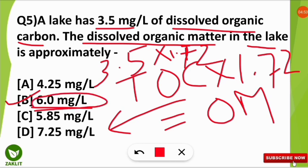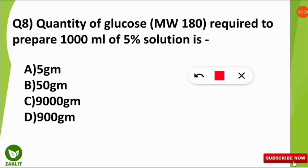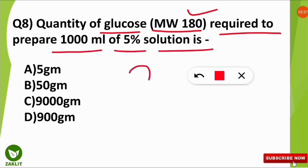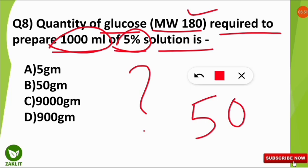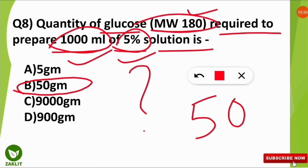The next question: what quantity of glucose (molecular weight 180) is required to prepare 1000 mL of a 5% solution? This is simple — 5% of 1000 mL = 50 grams. So 50 grams of glucose is required. No need for molecular weight or moles if your concept is clear.